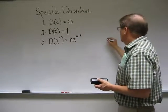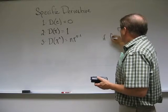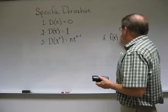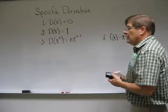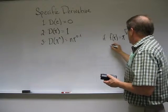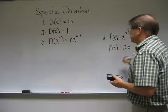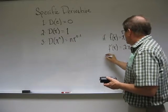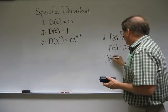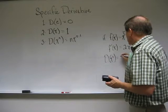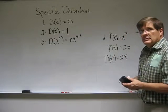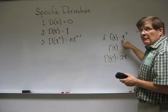For example, if f of x is equal to x squared, then f prime of x is equal to 2x. Or in other words, the derivative of x squared is 2x. Now you know what this graph looks like. F of x is equal to x squared.